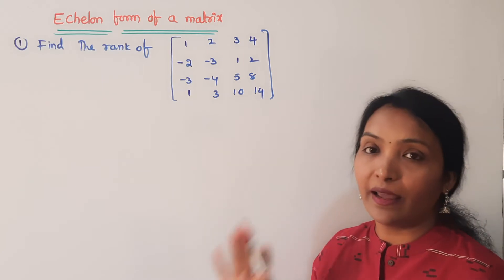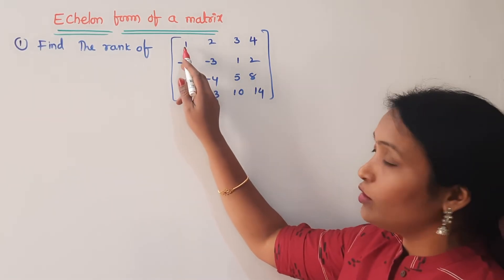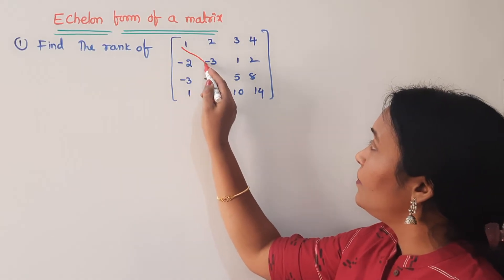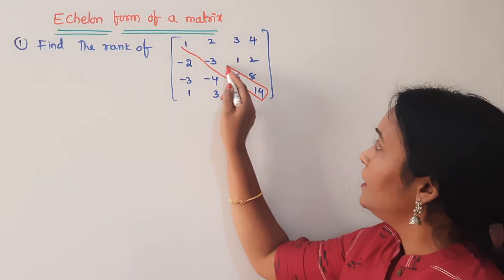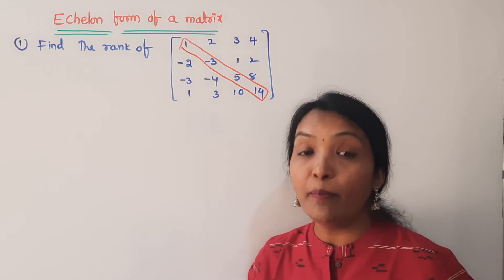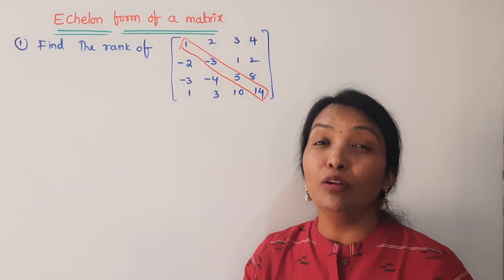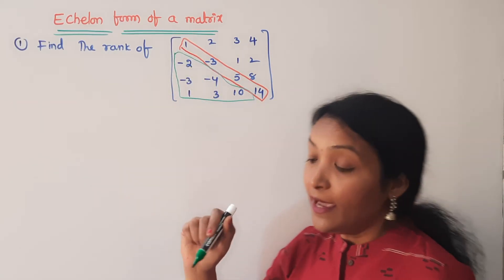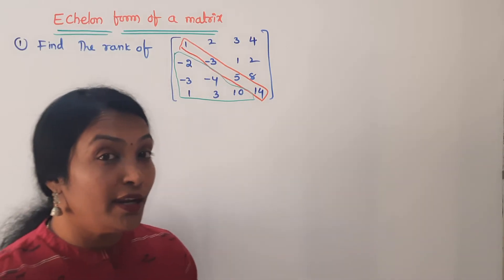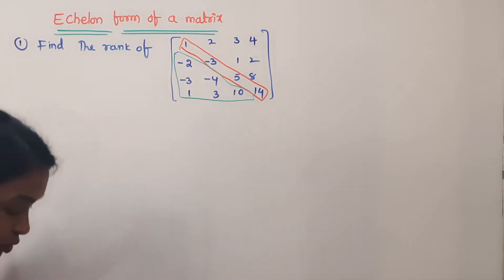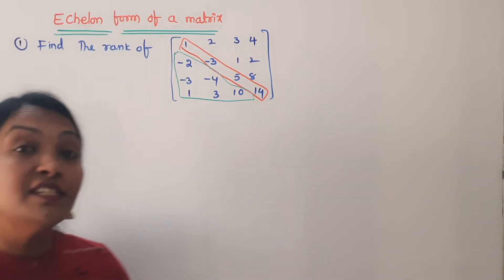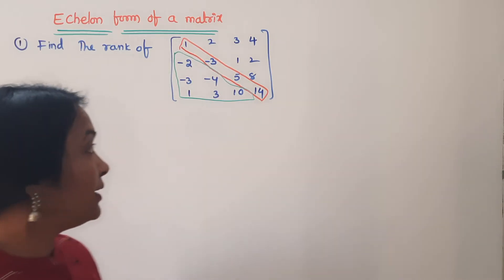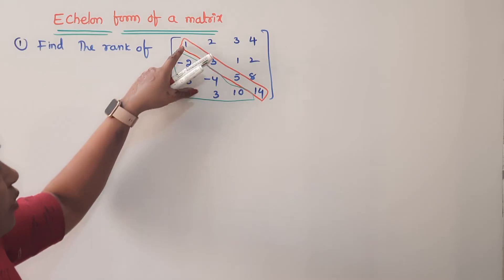The matrix diagonal elements: first row is the first element, second row is the second element, third row is the third element, fourth row is the fourth element. The diagonal elements should be 1. The first row's first element should be 1. Below that should be 0. If needed, interchange rows or divide to make it 1.